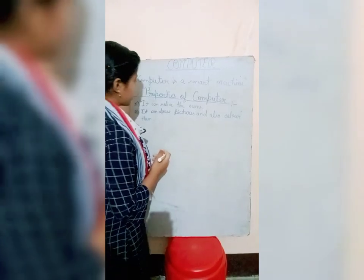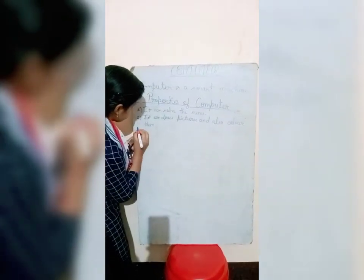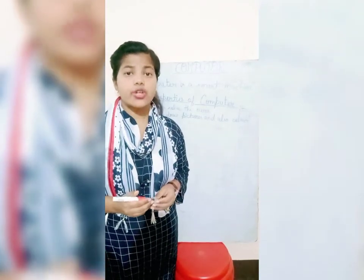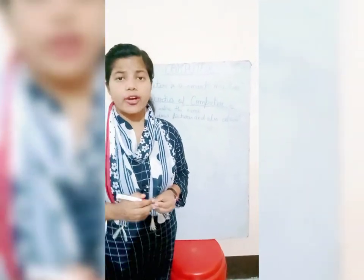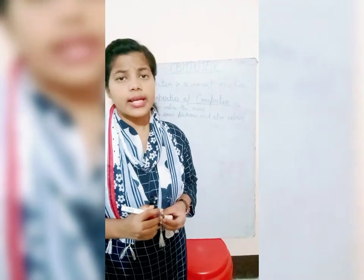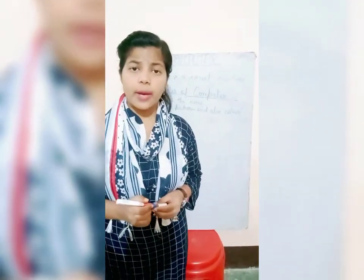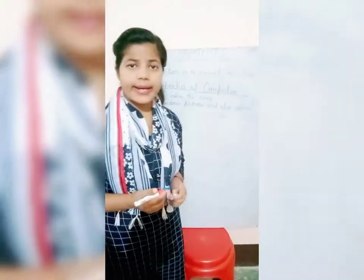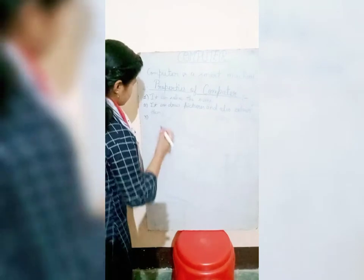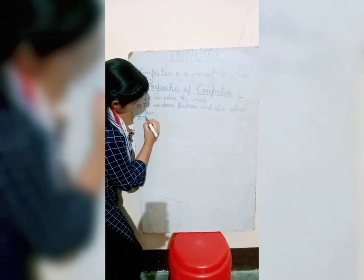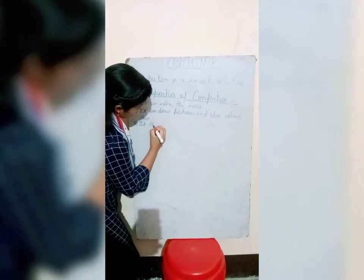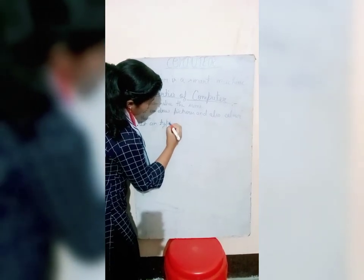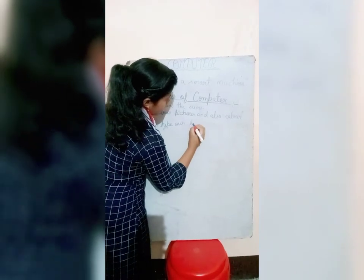And the next property of the computer is: computer can type our question paper and it can also type the letters that we can send to anywhere. Computer can type anything that you want. So the next property is it can type our letters.